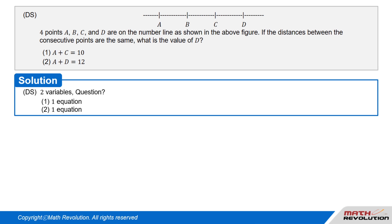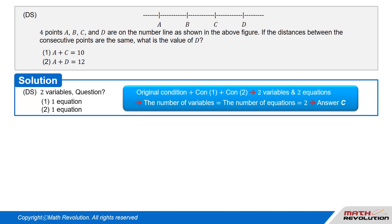DS question with two variables. Let the original condition in a DS question contain two variables. Now two variables would generally require two equations to find the value of the variables. We know that each condition would usually give us an equation resulting in a total of two equations.